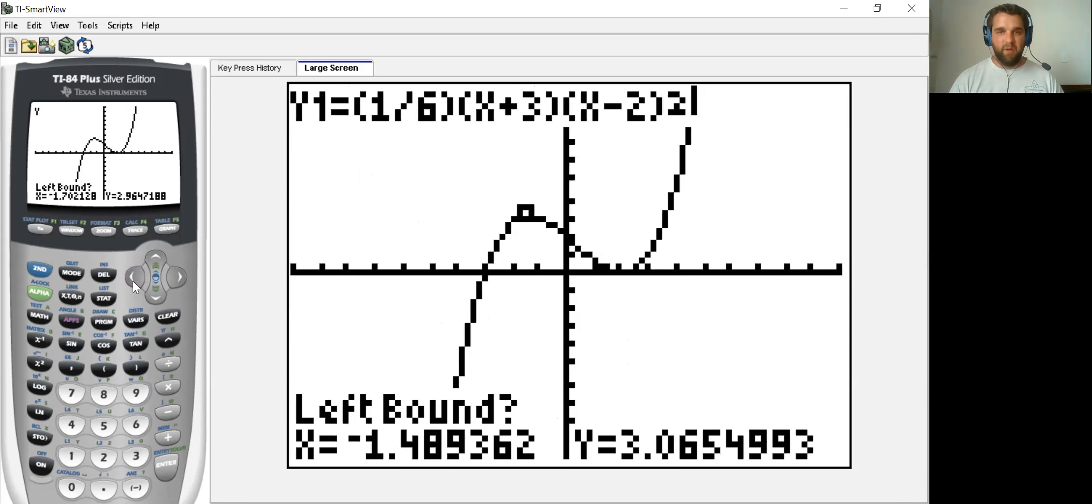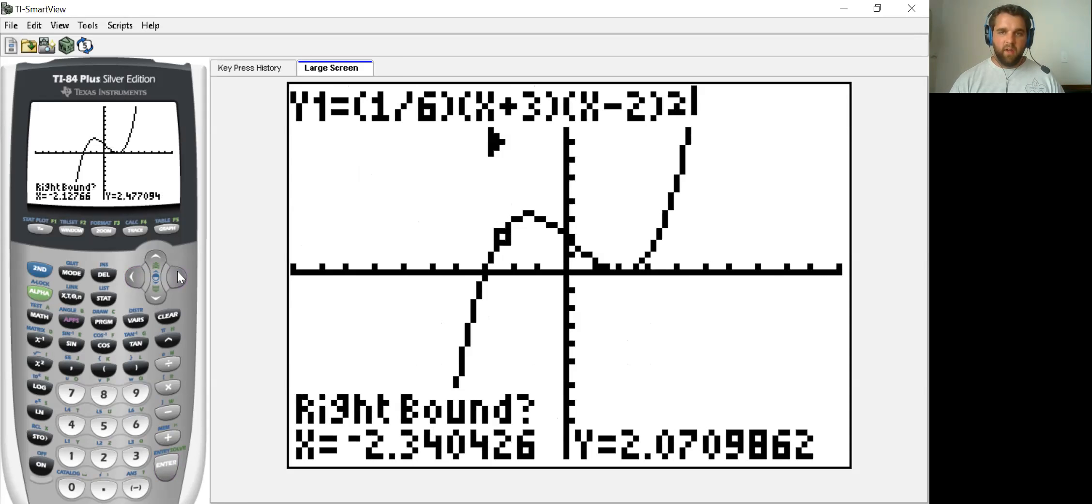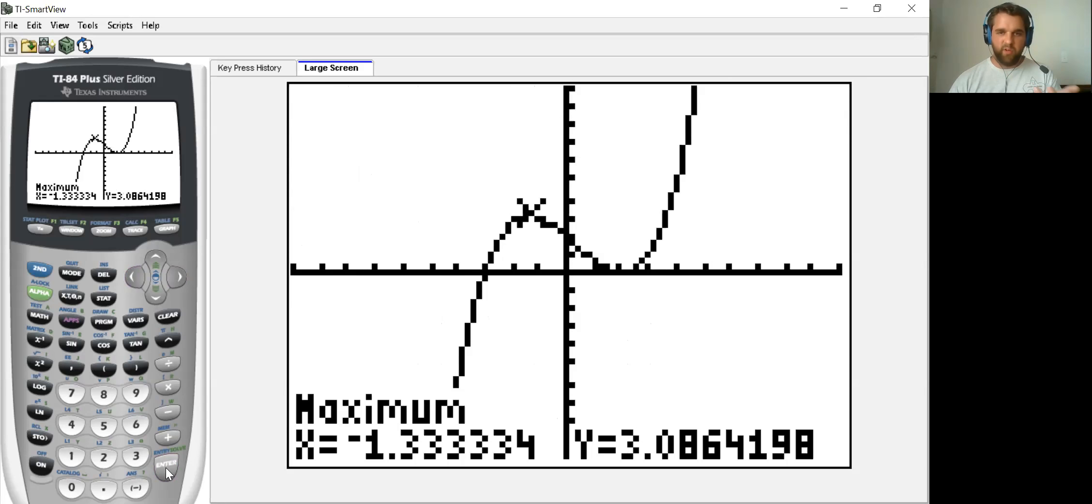So what we're trying to do is find this maximum point that's just worried about that one little area. You could call it a local maximum. So we just need to go to the left of that maximum point, hit enter, then we go over to the right, hit enter again, just hit enter once more to guess, and our local maximum is going to be there when x is about negative one and a third, and y is at about three.